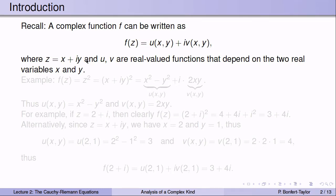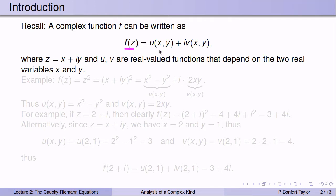As a reminder, a complex function f can be split up into its real part u and its imaginary part v. When we write z as x plus iy, then f becomes u plus iv, where u and v are functions that output real numbers and take two real parameters x and y.